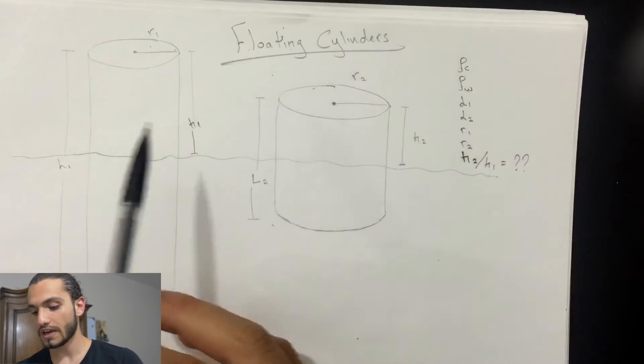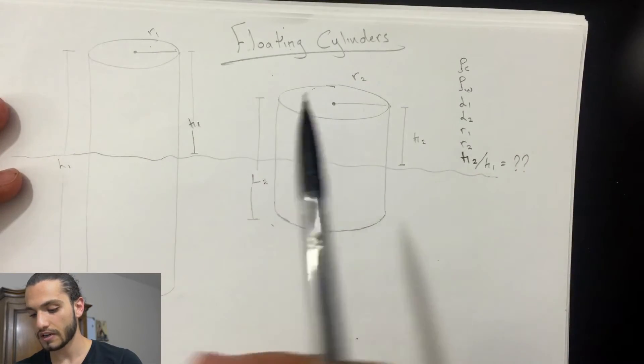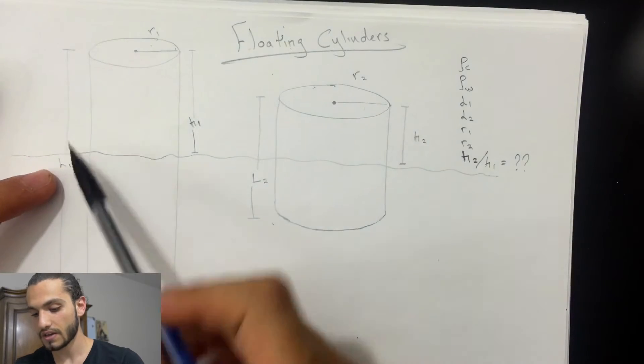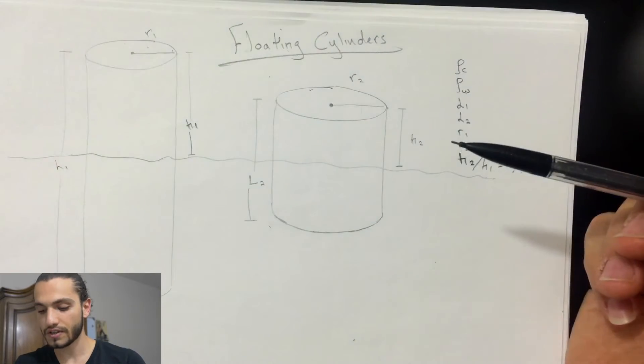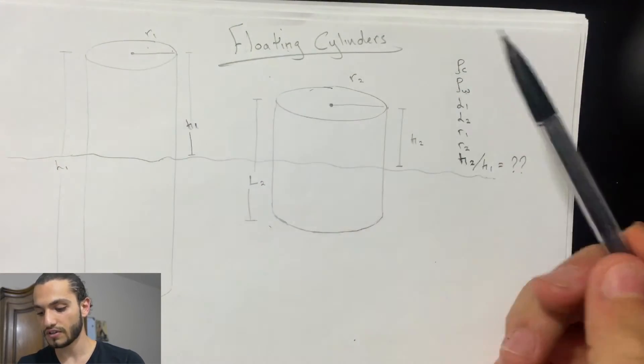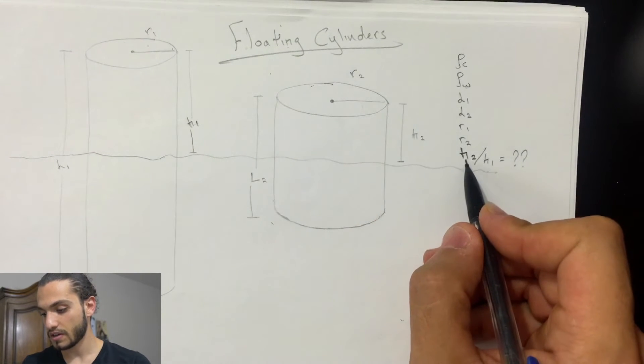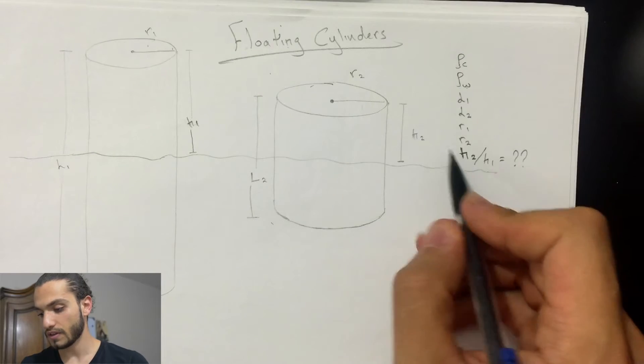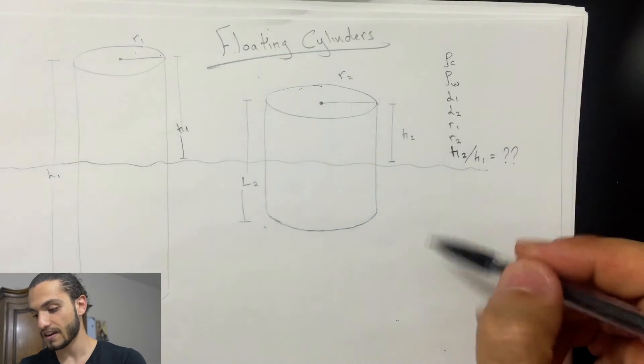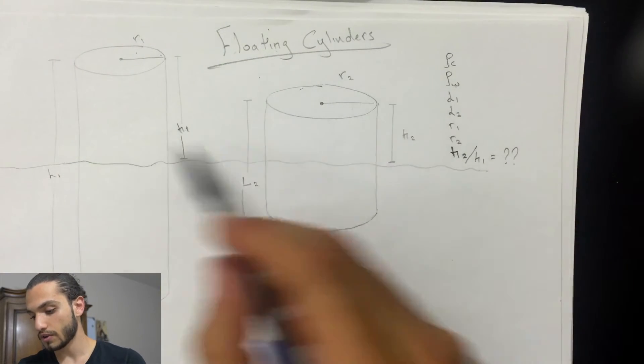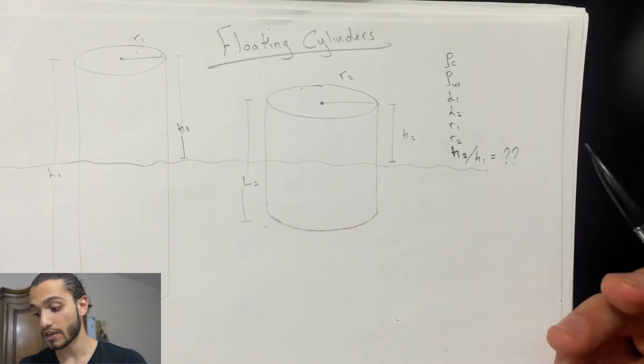So this question we got two cylinders. What they gave us is the height of each cylinder and the radius of each cylinder. What they want us to find is the ratio of the height that's not inside of the water for each one, so h2 divided by h1.